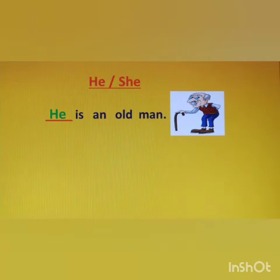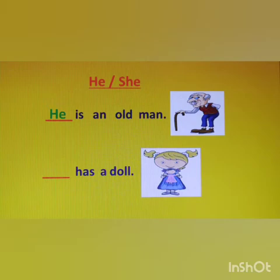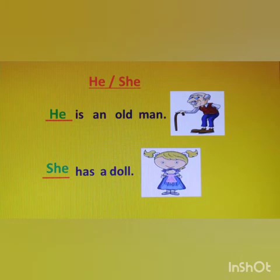The next example: blank has a doll. Children, who has a doll in the picture? Yes, the girl has a doll. So what shall we write here — 'he' or 'she'? We will write 'she', because here we are talking about the girl, and for a girl we use 'she'. Let's read it: 'She has a doll.'